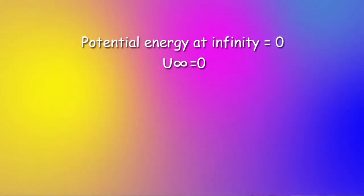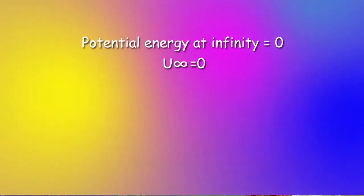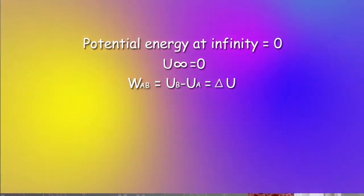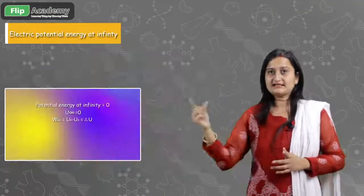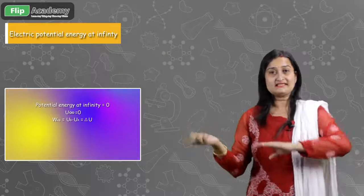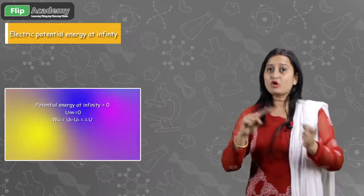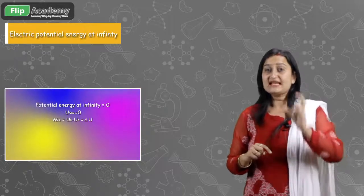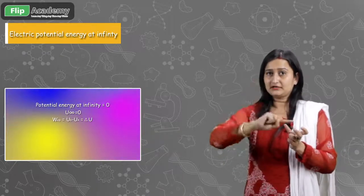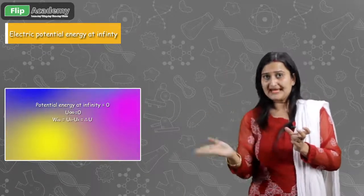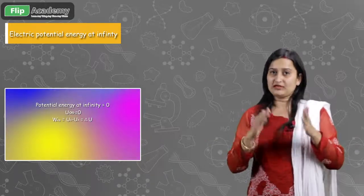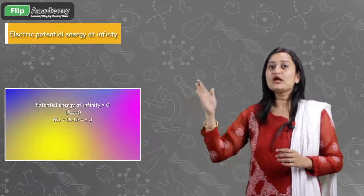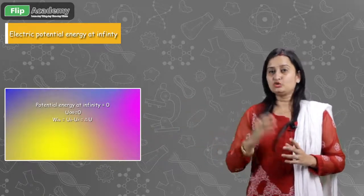If we apply this condition to the formula, WAB = UB minus UA, then delta U is equal to the work done. We have already discussed that the change in potential difference equals the work done, because work done from A to B corresponds to the potential energy.